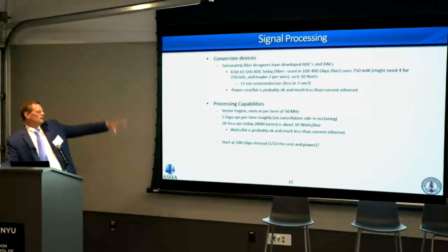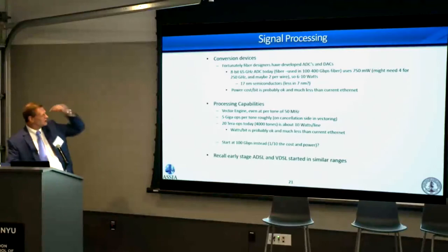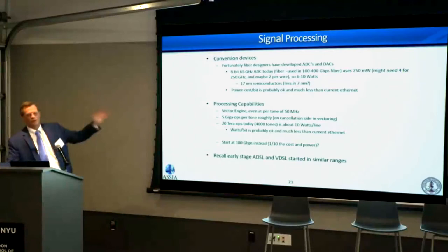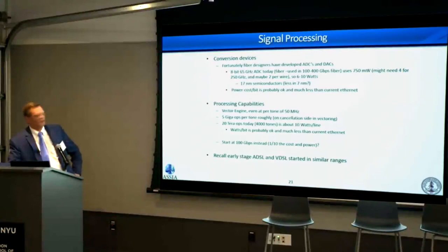If we reduce to 100 Gbps and lower the bandwidth, cost and power would likely scale down by about a factor of ten. Signal processing scales with bandwidth. Analog people at early ADSL and VDSL standards meetings said a 14-bit A-to-D converter at 2.2 MHz was against the laws of physics — those are now dime-store commodities. So we should not be daunted by the fact we're not quite there yet on the analog conversion devices, because we're not that far away.